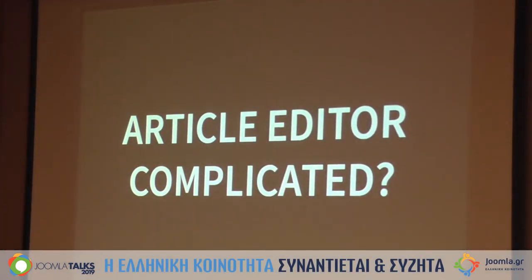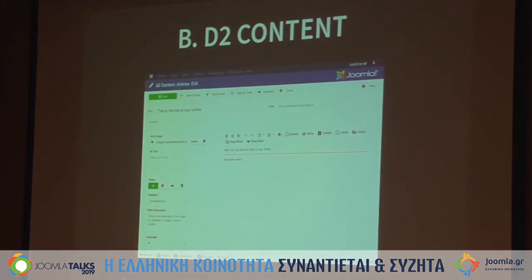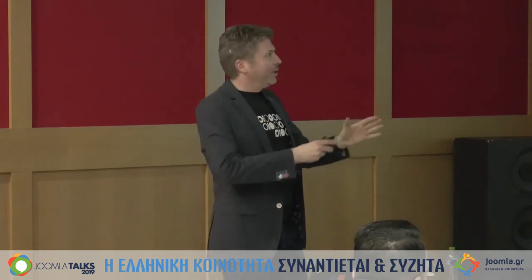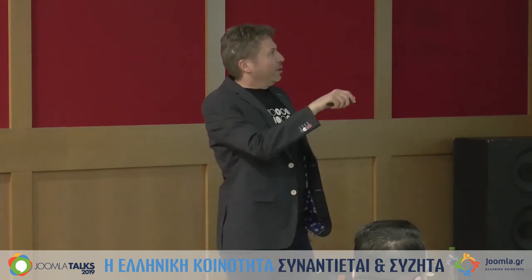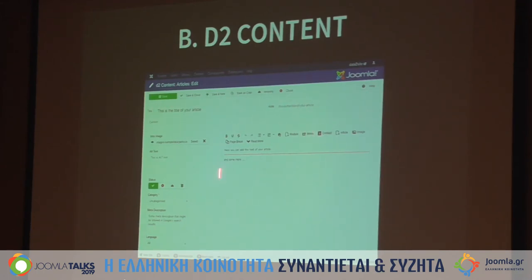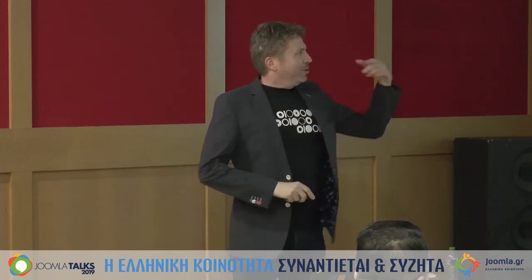Who thinks the Joomla article editor is complicated? I had the same idea. Together with someone else in the Joomla community I created D2 Content. When you install it you have a simplified article manager — you start with a title and alias, add your text, an image, alt text, status, category, meta description, and language. That's all. If you need more you can still use the standard Joomla editor alongside it, and you can give the simplified one to your customers while using the full one yourself.